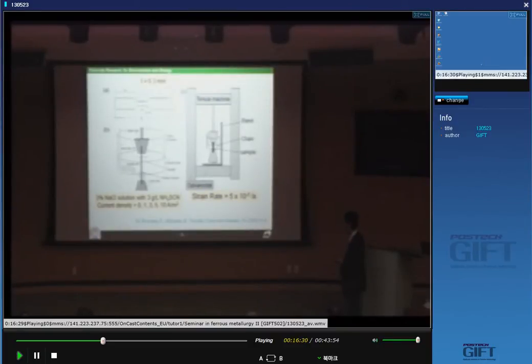With this set of equipment, we can charge hydrogen by electric charging with different levels of current density: 0, 1, 3, 5, and 10 ampere per square meter. Then you can control the hydrogen amount of a specimen.